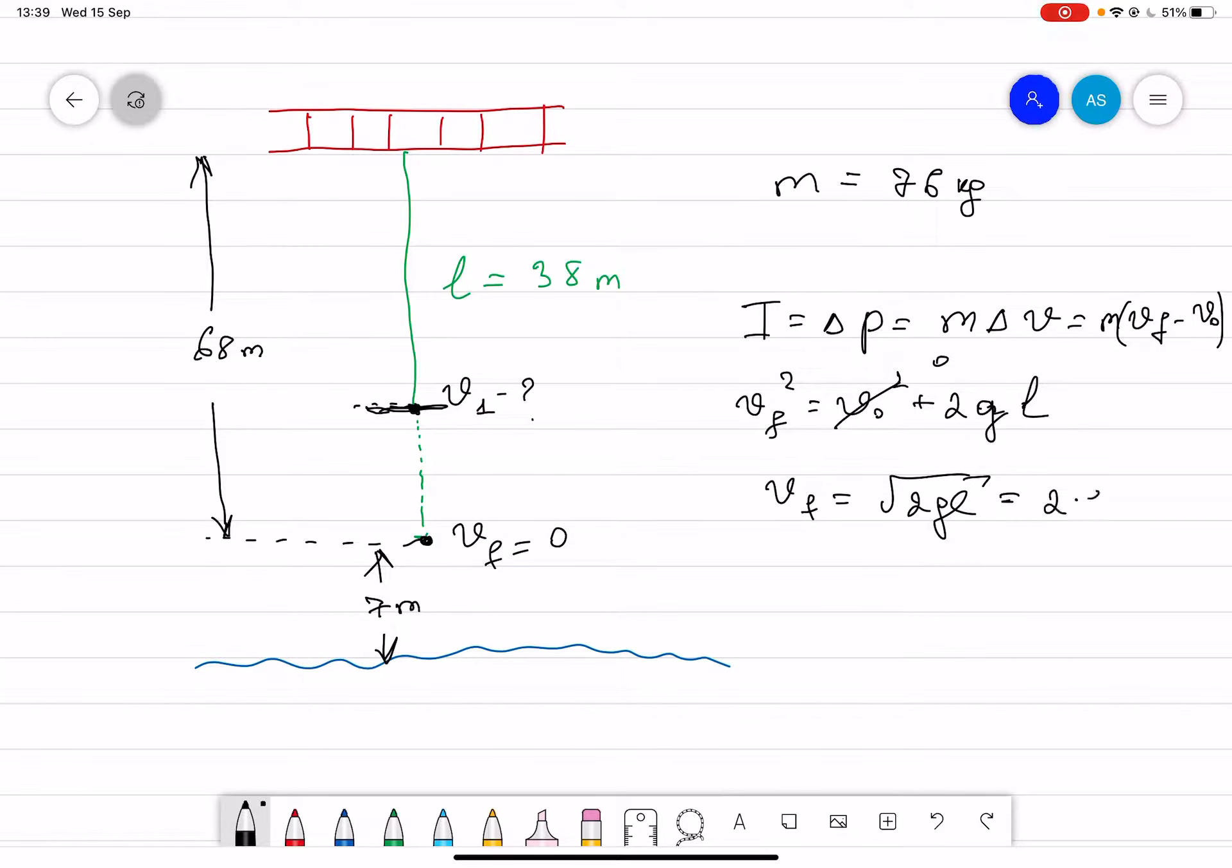Two times 9.8, l is 38 meters. So if you do the calculation, that should give you 27.3 meters per second.